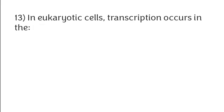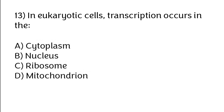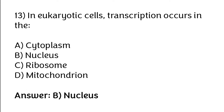In eukaryotic cells, transcription occurs where? Options: cytoplasm, nucleus, ribosome, mitochondria. The correct answer is option B — in eukaryotic cells, transcription occurs in the nucleus.